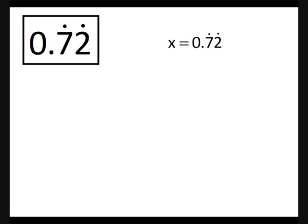We start by saying that x equals 0.72 recurring. We times it by 10 to get 7.27272727.